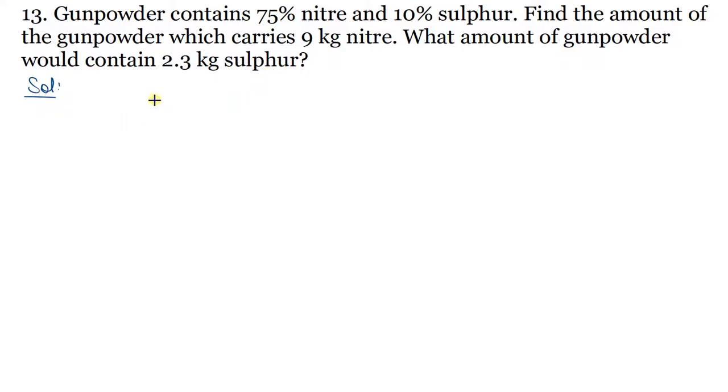So first of all, we have to note what is given. Gunpowder is 75% nitre. If we take 100 kg gunpowder, that is 75 kg nitre and 10% means 10 kg sulfur. One more thing is that 75% nitre and 10% sulfur total is 85%.